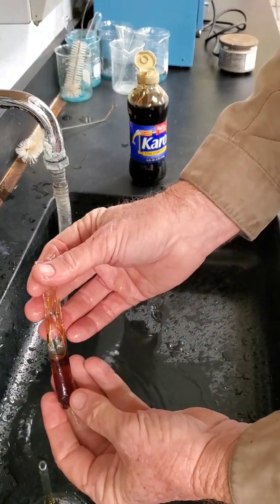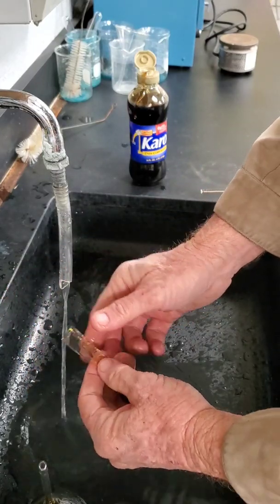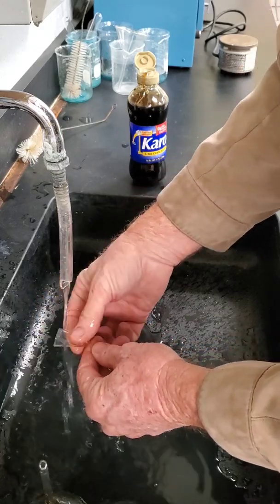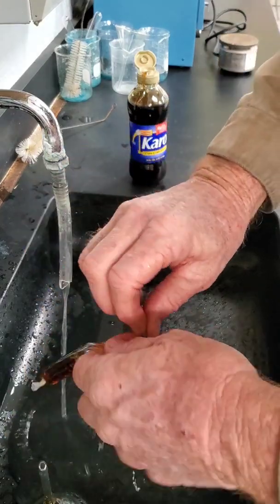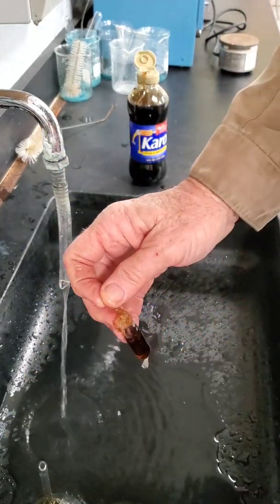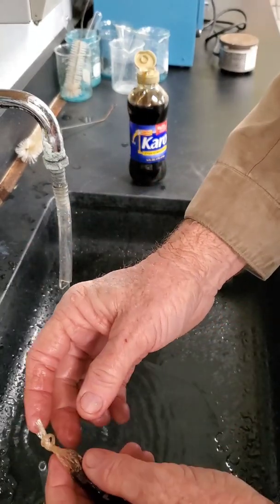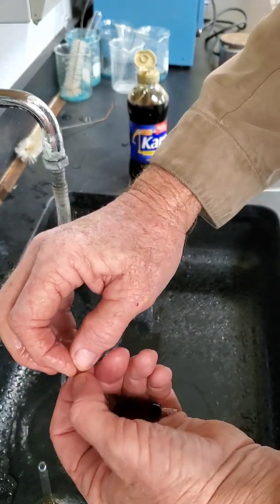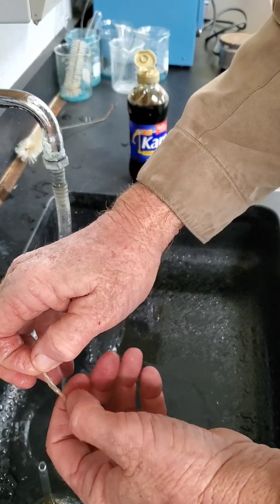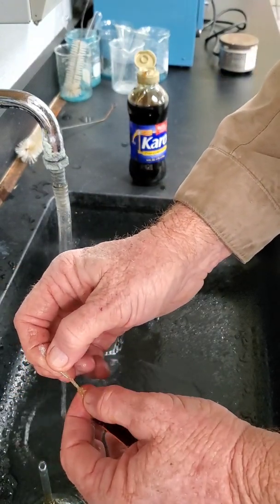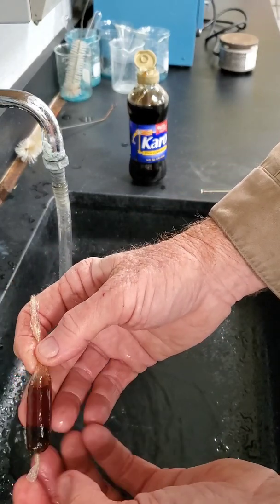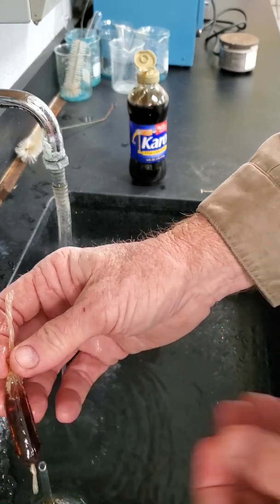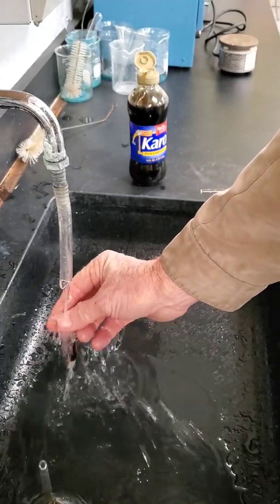Now we're going to rinse it off. We're not going to let water get inside the tube, we're going to rinse off the outside. Then we're going to tie this end in a knot. We have the knot and we're going to slide that knot down as close to the syrup as we can get it, so our little syrup hot dog that we've made. I'm going to pull it tight. So we have a little bag sealed on both ends, so nothing can get out.